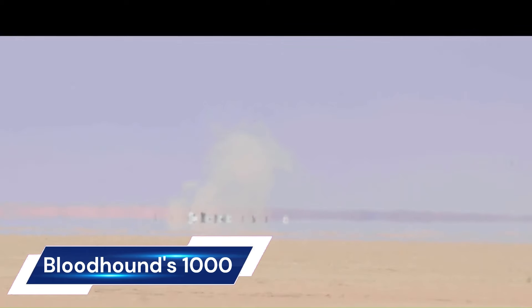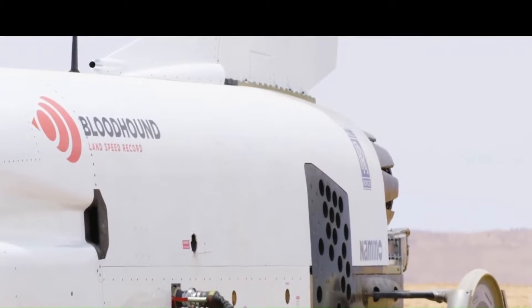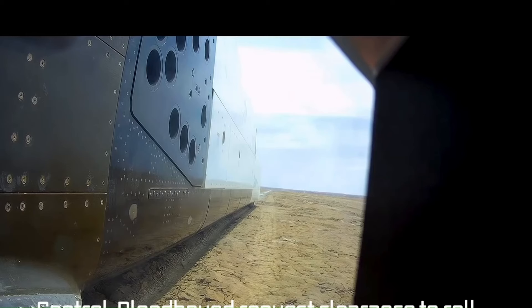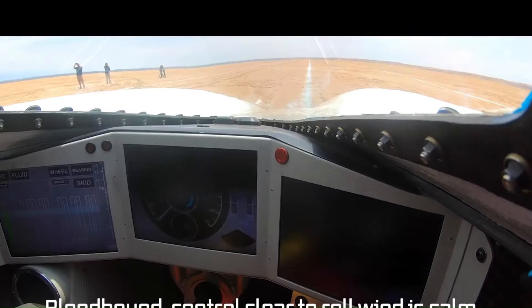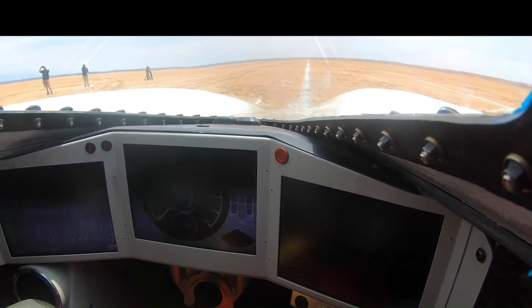Bloodhound 1000. The Bloodhound LSR, formerly known as Bloodhound SSC, is a fascinating feat of engineering aiming to achieve supersonic speeds on land and break the current world land speed record of 763 miles per hour, 1,228 kilometers per hour.